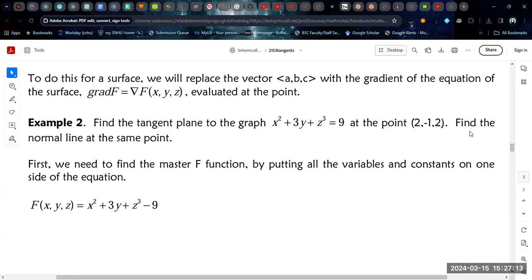So first thing, we create our big F function, put everything on one side of the equation, so I move the 9 over, set it equal to 0. That's big F.